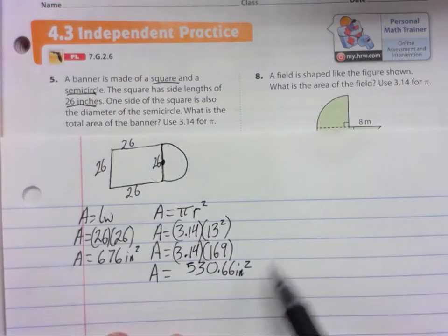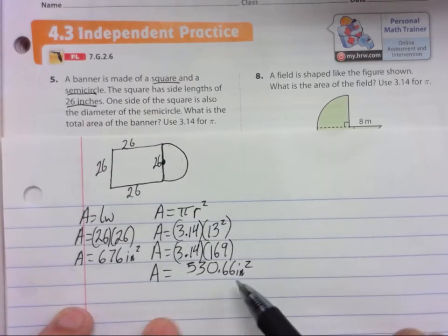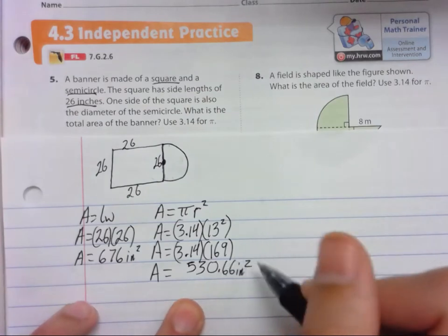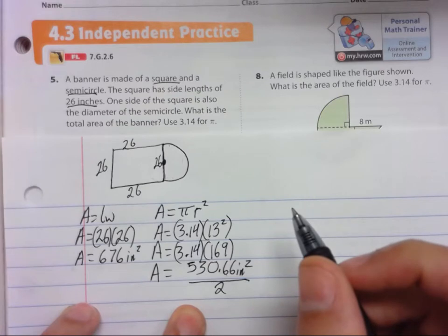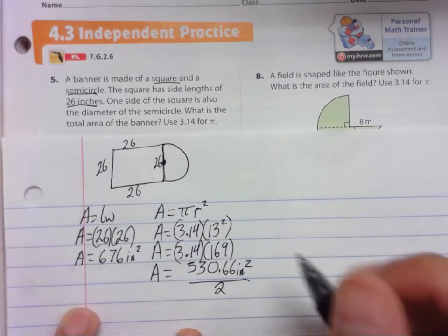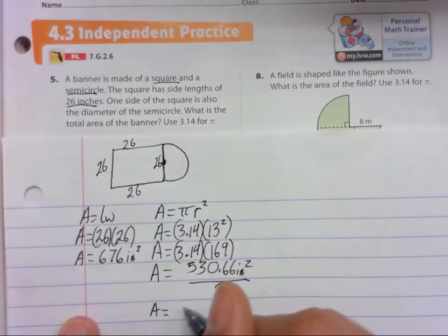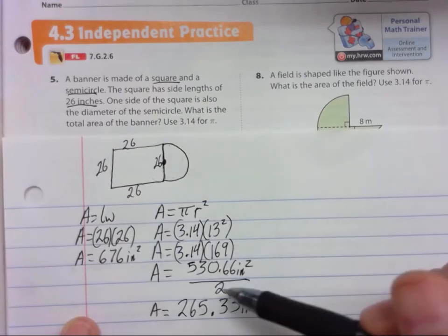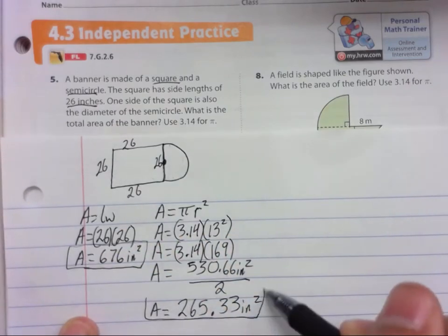Now be careful here because we had to split this shape apart. Now we have to put it back together, but we just found the area of a whole circle. We don't have a whole circle. We only have half. So now we need to divide this by 2. And when we divide it by 2, the area is actually 265.33 square inches. So this is our area for the square and this is our area for the semicircle.